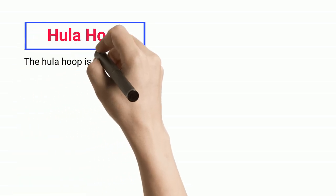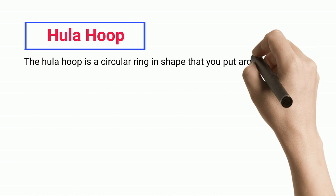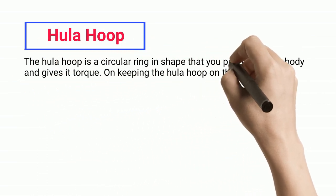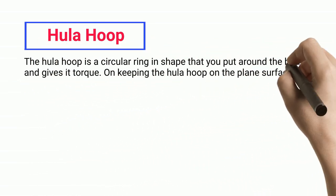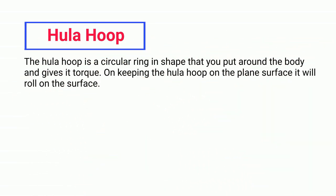Hula hoop. The hula hoop is a circular ring in shape that you put around the body and gives it torque. On keeping the hula hoop on the plane surface, it will roll on the surface.